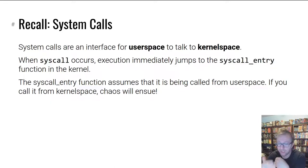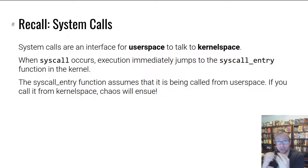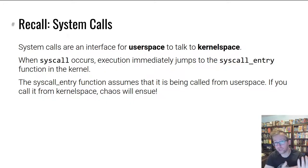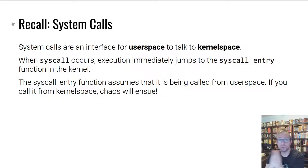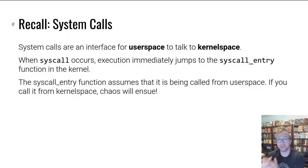Why not? Because it uses system calls, and if you recall from the program interaction module, system calls are an interface for user space code to interact with a kernel that it's running under the supervision of. When a syscall instruction happens and control flow redirects into the syscall entry function inside the kernel, the kernel assumes that it is coming from user space — that control had been in user space, execution had been in user space, and then it moved into the kernel. This assumption leads the kernel to make certain actions which are invalid if code execution is coming from kernel space. It's actually shockingly hard to create a functional and secure syscall interface that can also be triggered from inside the kernel. That's just not what a syscall is for.